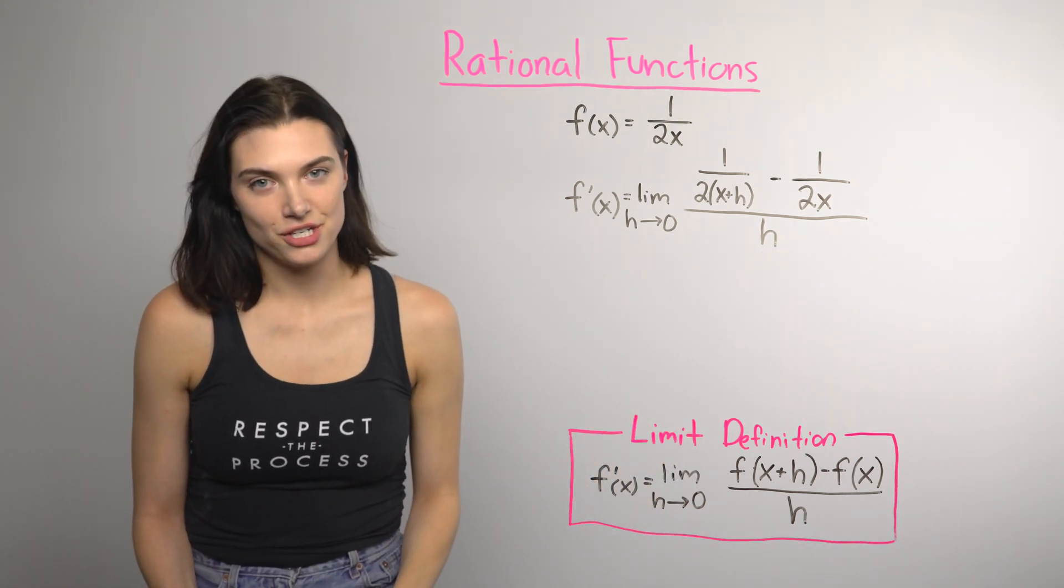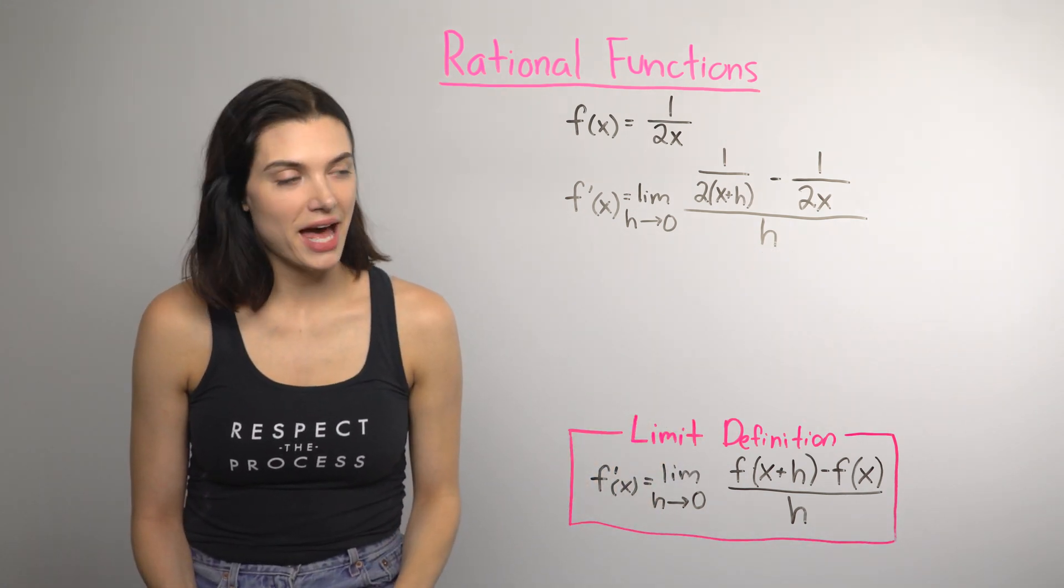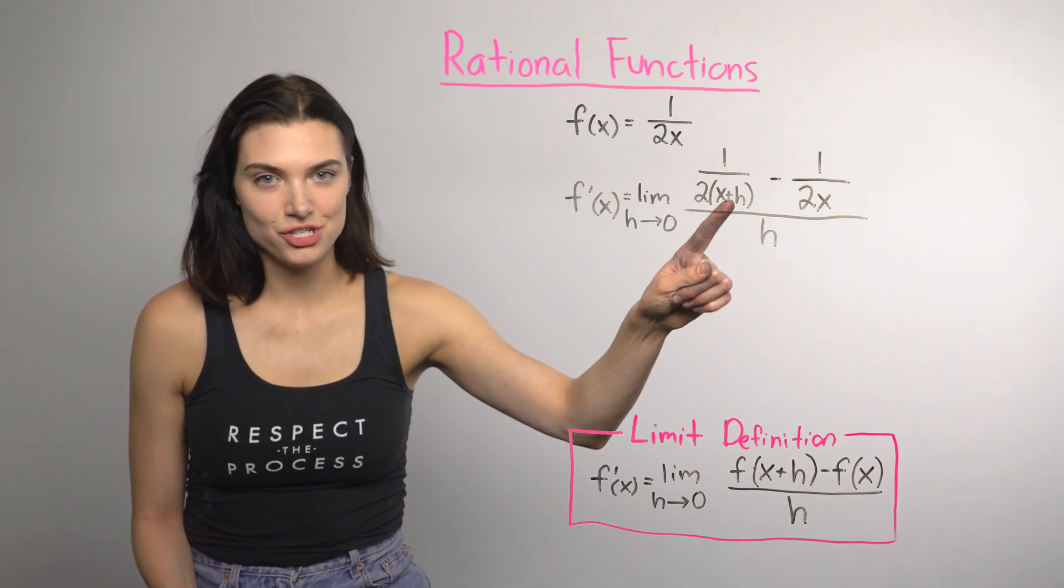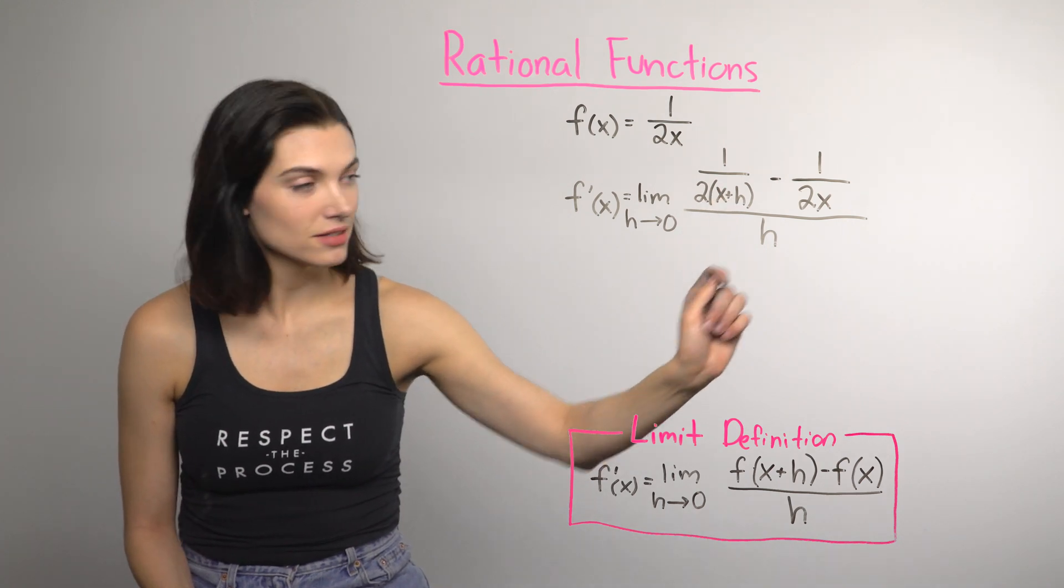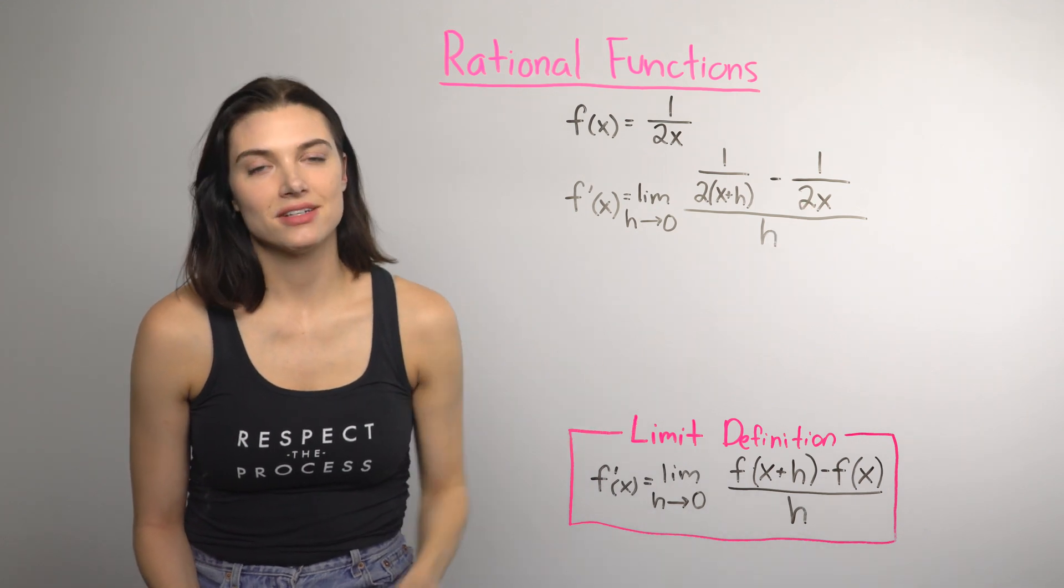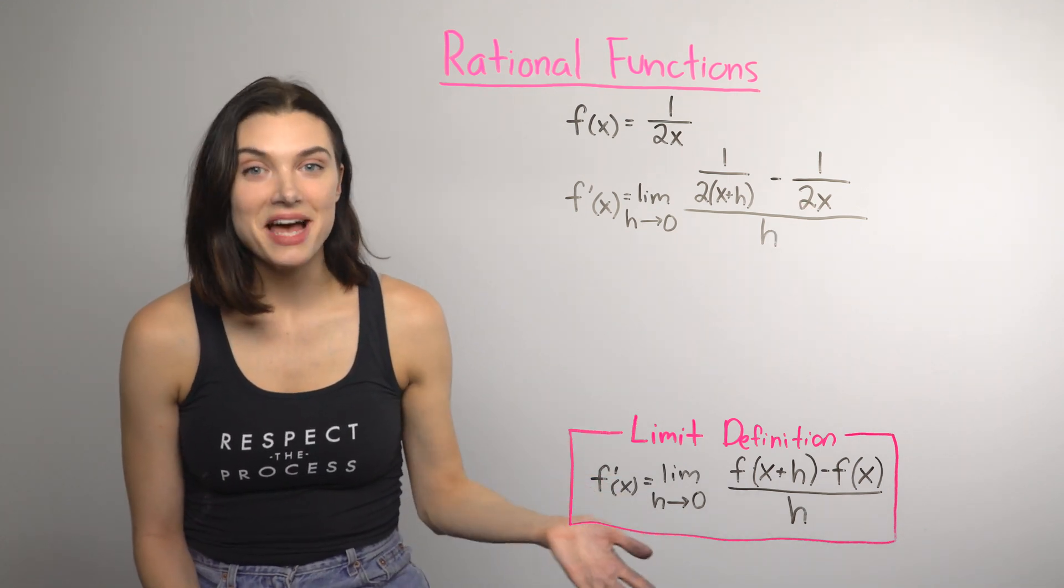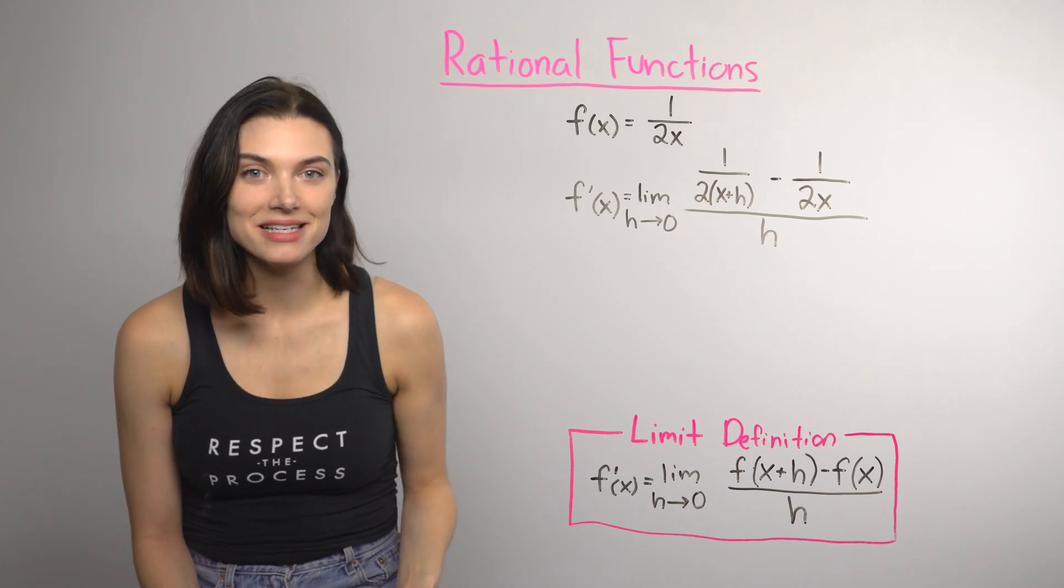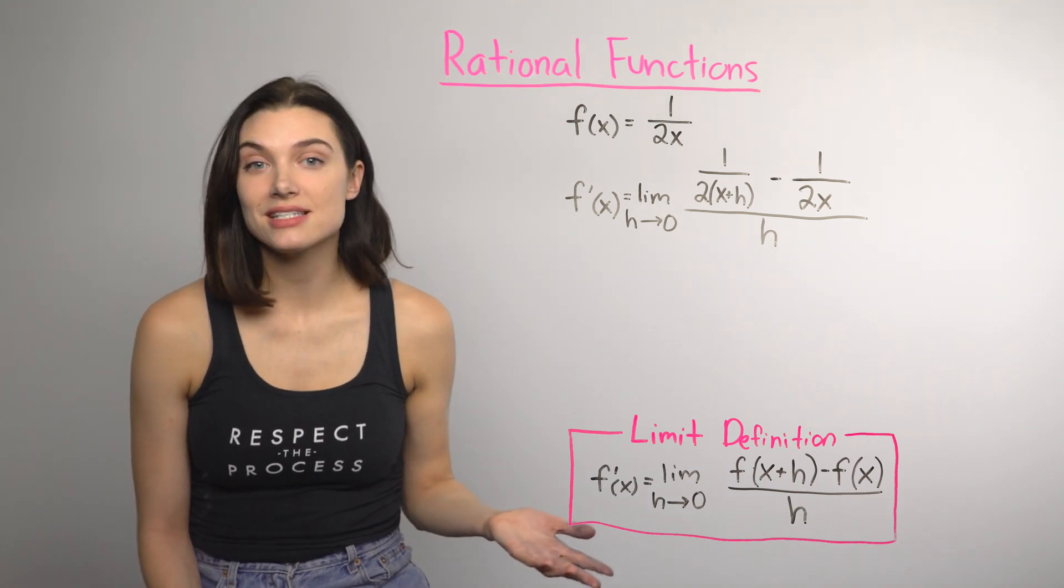So, I rewrote the limit definition using the function. To do that, I plugged x plus h in for x into the original function, subtract it off the original function, and divide it all by h. Okay, this is a mess, but we can clean up the mess in pieces. Where might be a good place to start?